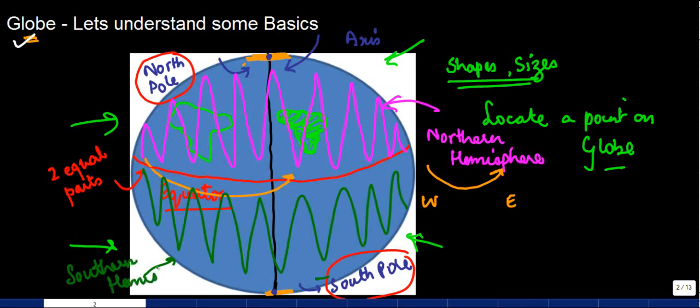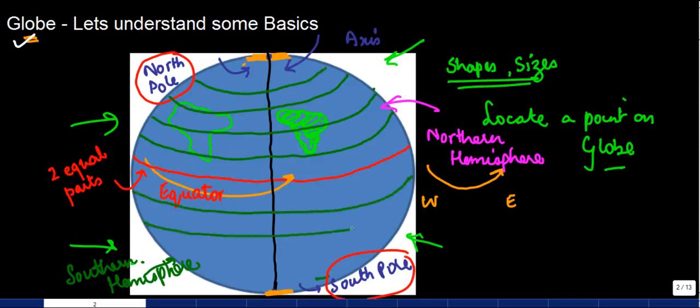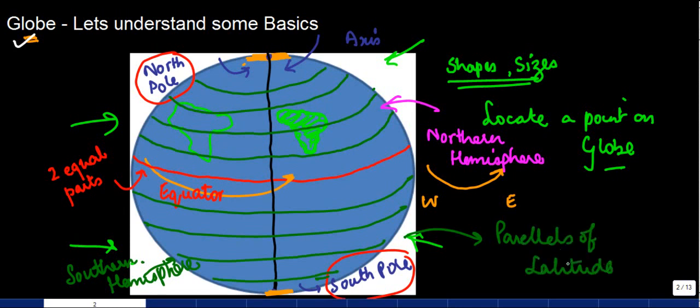Now if I draw certain lines parallel to the equator, something like this, and these were going to circle it back somewhere around here, these lines which are actually parallel to the equator are basically known as the parallels of latitude. Basically, the equator which we have over here is nothing but it represents zero degree latitude.